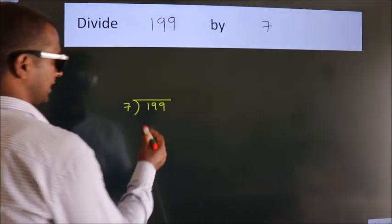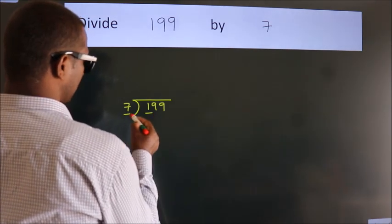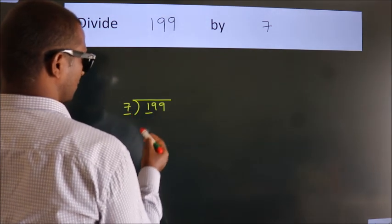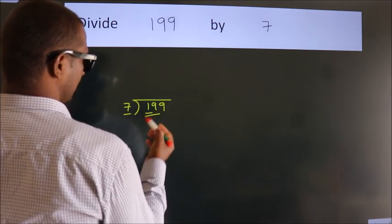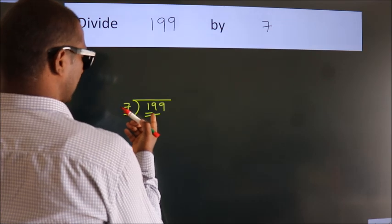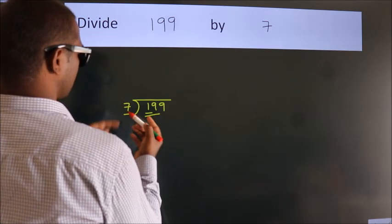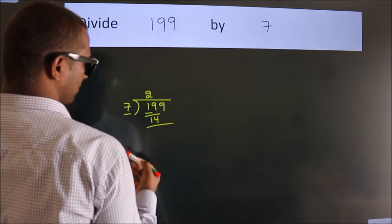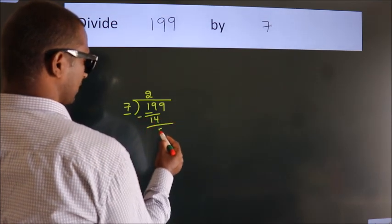Next. Here we have 1, here 7. 1 smaller than 7. So we should take 2 numbers, 19. A number close to 19 in 7 table is 7 twos, 14. Now we should subtract. We get 5.